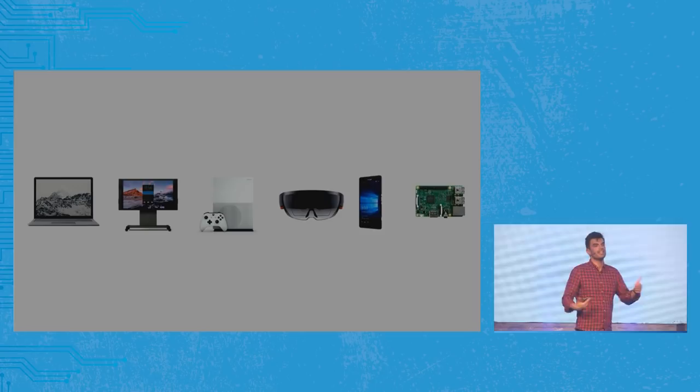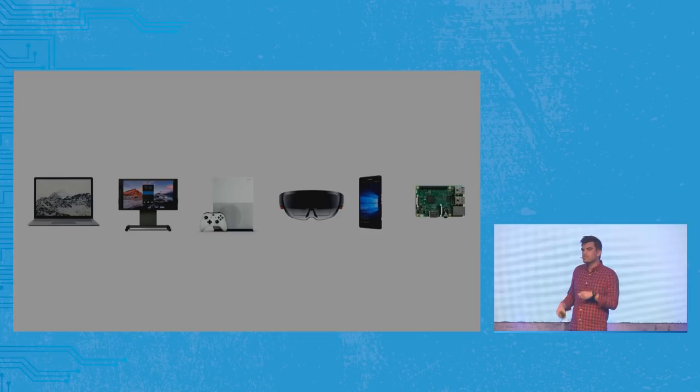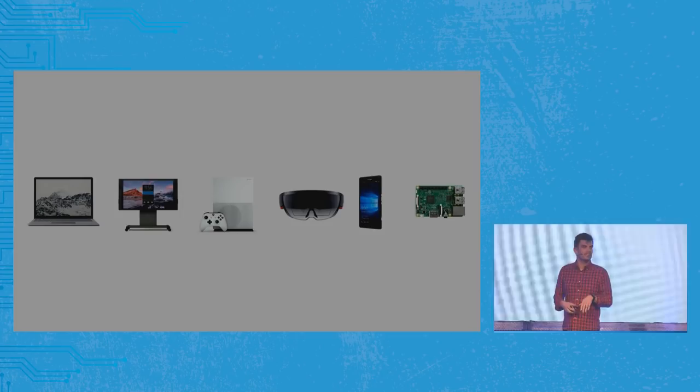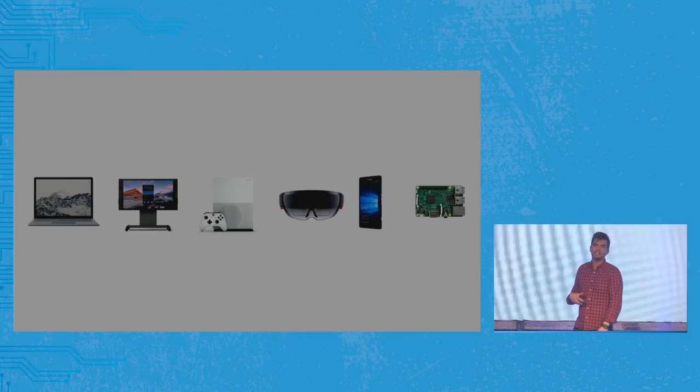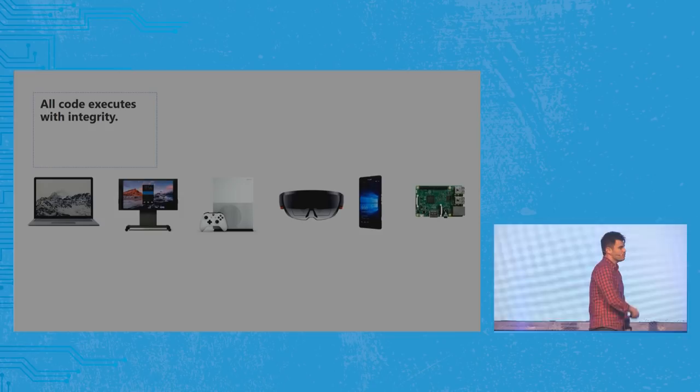What we've done is look at this practically. The security boundary framing isn't the best. How can we communicate exactly where we want to go long-term? We came up with six simple security promises that we think address this. Hopefully there won't be too many more t-shirts.